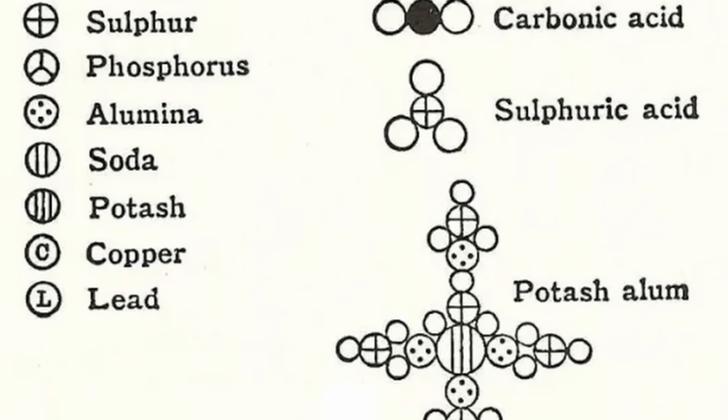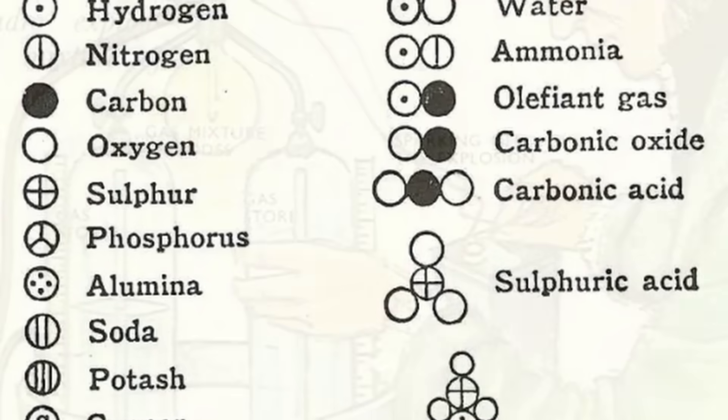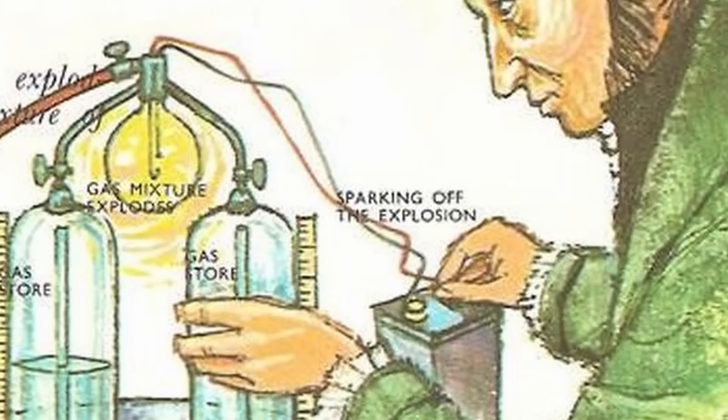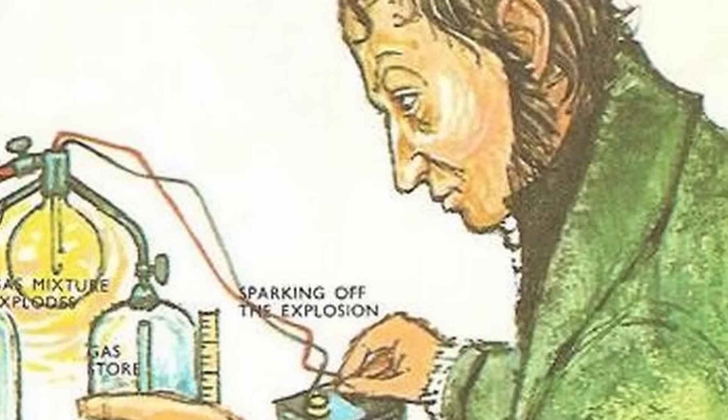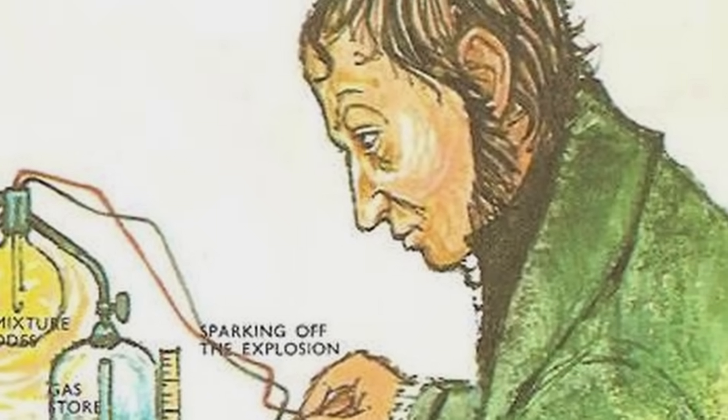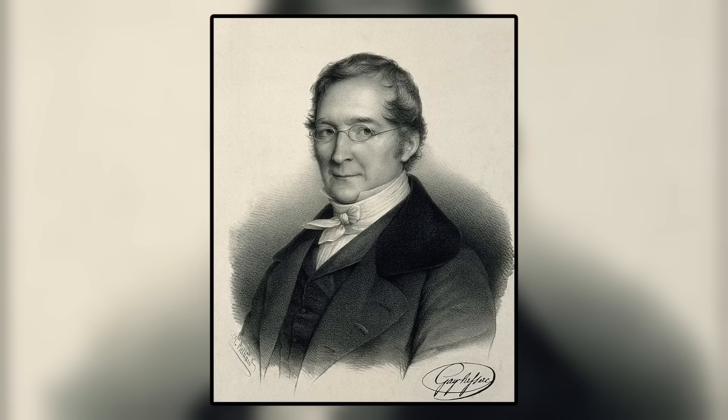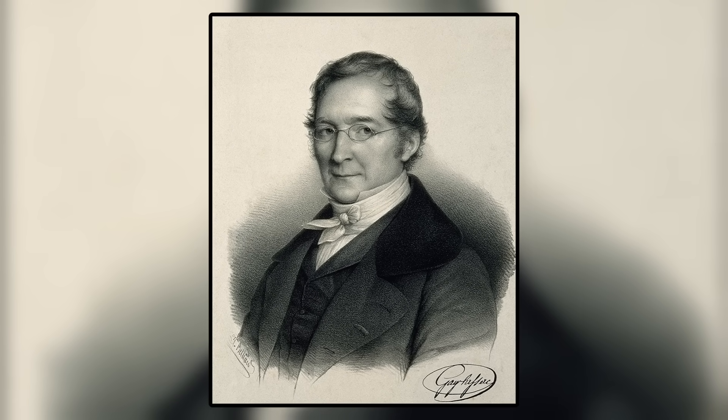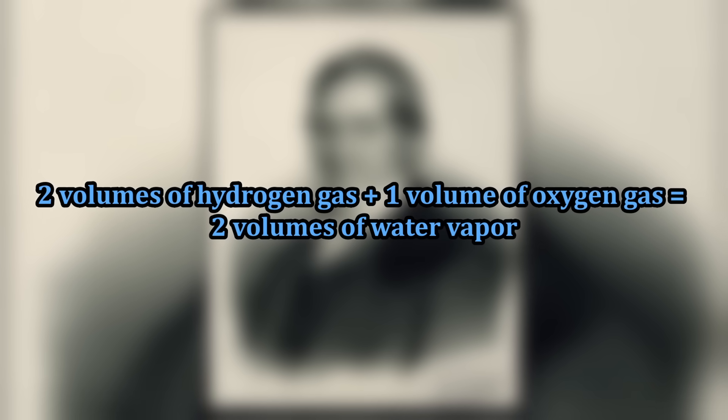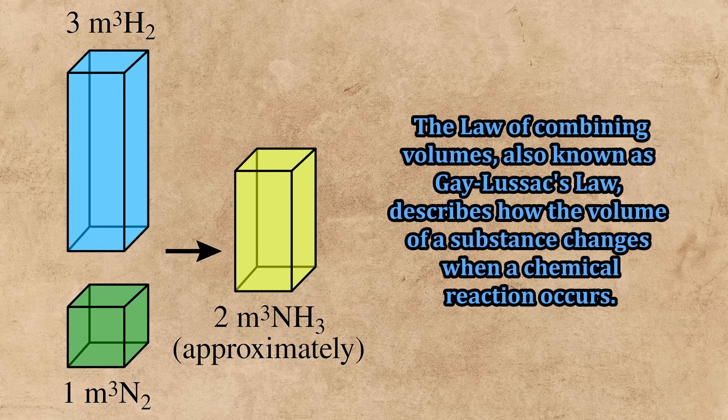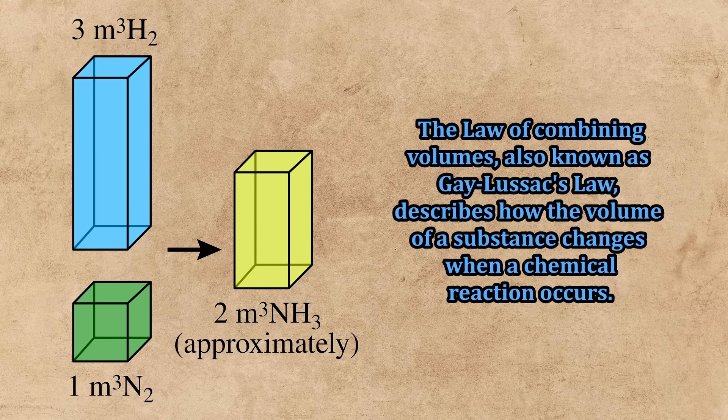However, one key issue surfaced in Dalton's theory in the coming years that proposed immediate problems, and it would take another feat of out-of-the-box thinking from another scientist to eventually solve this issue and shine Dalton's atomic theory in a different light. In 1809, French chemist Joseph Louis Gay-Lussac found that two volumes of hydrogen gas combine with one volume of gaseous oxygen to produce two volumes of water vapor. This realization led to the law of combining volumes, expressed in Gay-Lussac's 1809 paper.